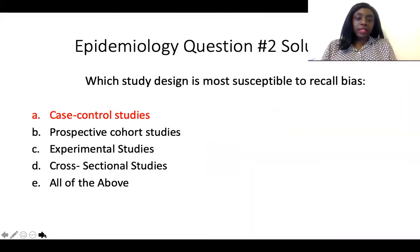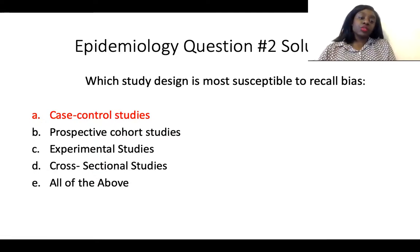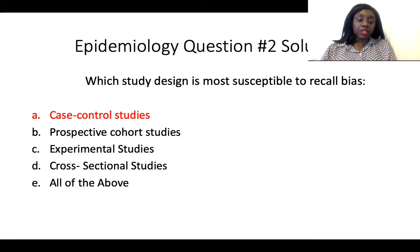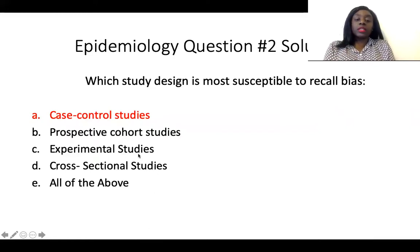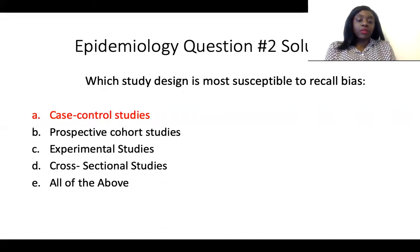The next question asks which study design is most susceptible to recall bias. That is case control studies. In case control studies, you select individuals based on disease status, so it is very hard for them to remember their exposure status. In future mini lectures, I will explain prospective and retrospective cohort studies, as well as ambidirectional cohort studies, experimental studies such as the randomized control trial and quasi-experimental designs, and cross-sectional studies.